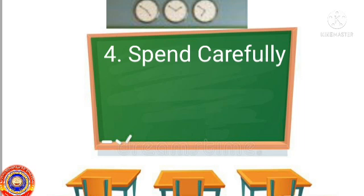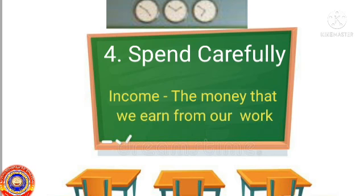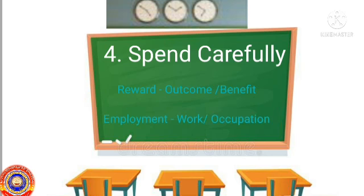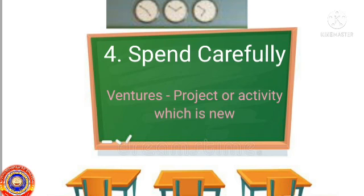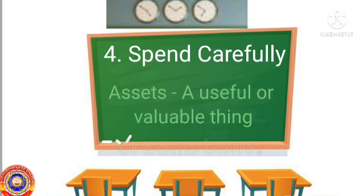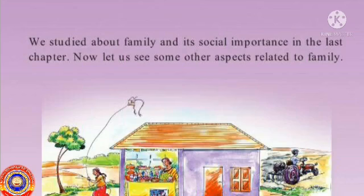Let's start. First one: income — the money that we earn from our work. Outcome or benefit is called reward. Employment means work or occupation. A project or activity is called ventures. Assets means a useful or valuable thing.